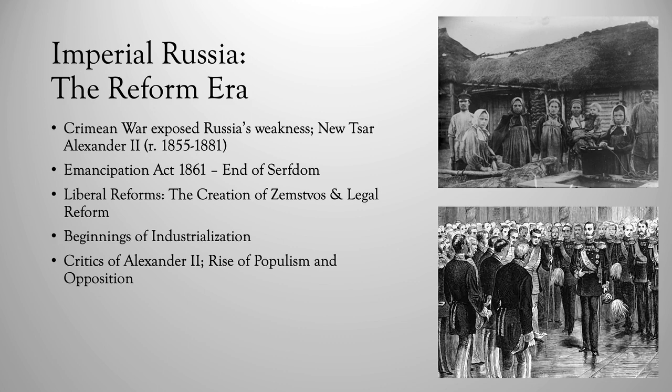Beyond the Zemstvos, there were many successful legal reforms enacted in 1864. Alexander II created a regular system of local and provincial courts across Russia. He also codified a judicial code — basically a series of laws — that accepted equality before the law, which was one of the most important modern developments in European politics. There was also more state-sponsored education in parts of Russia, which led to a gradual increase in literacy, though still very far behind Western Europe.